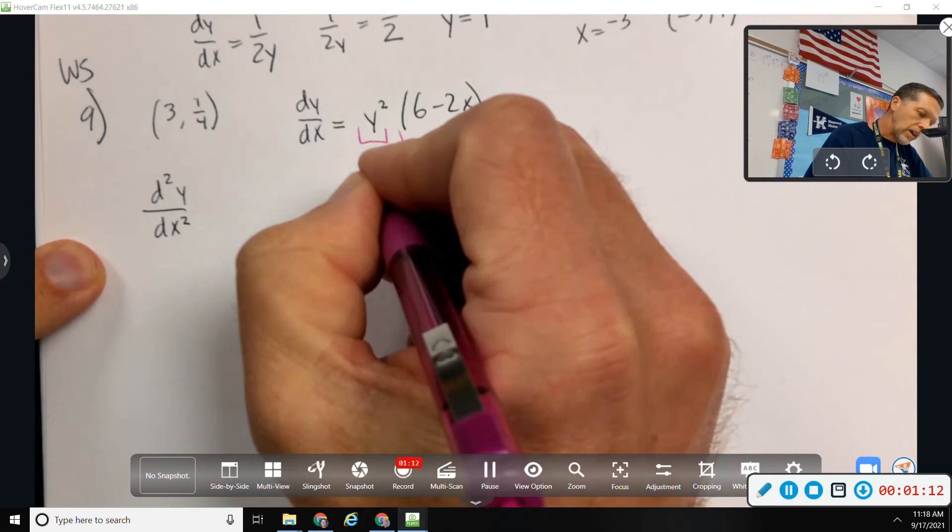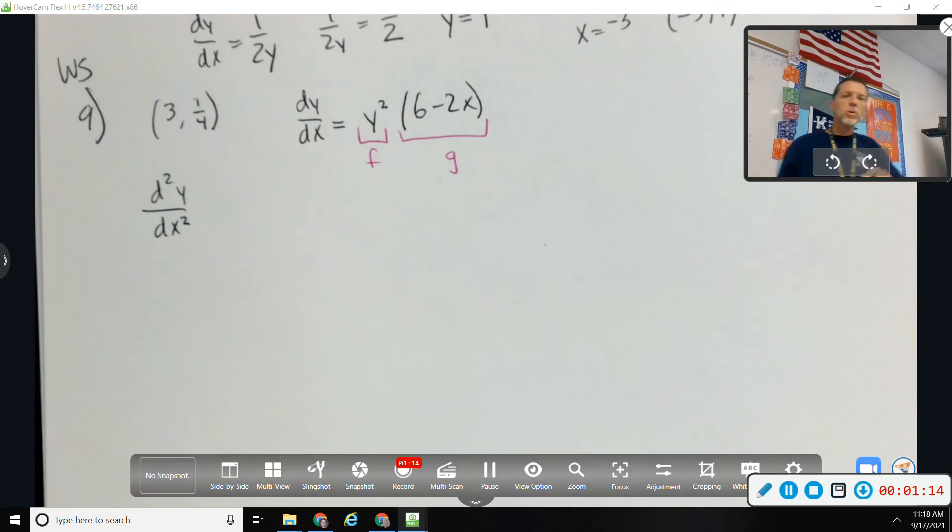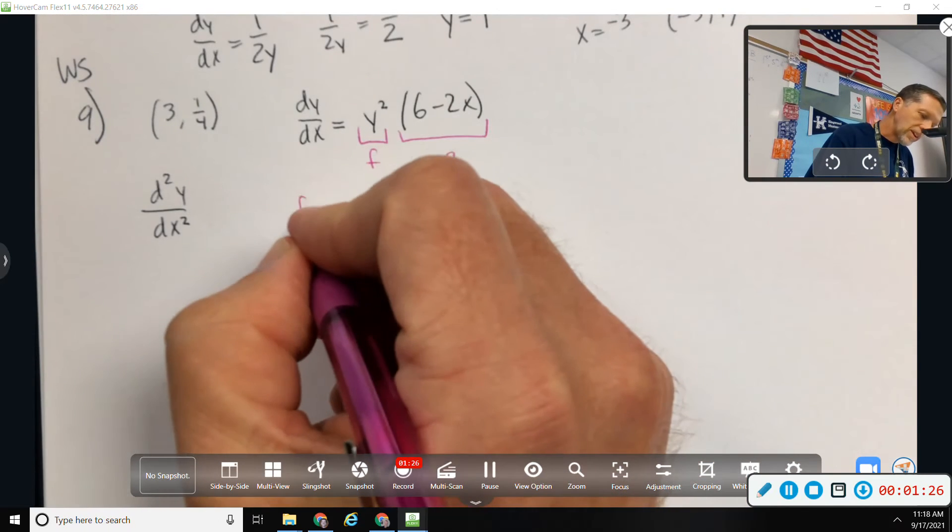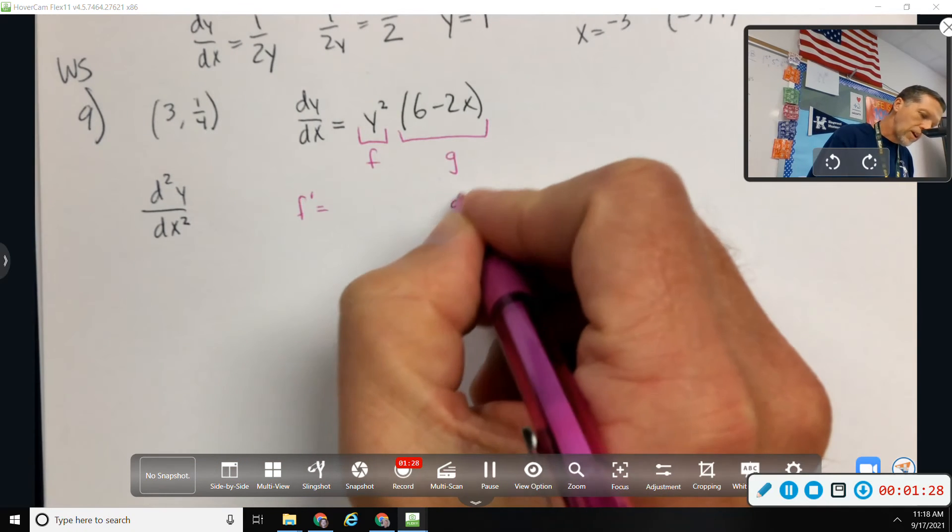This is going to have to be a product rule. And it looks more complicated than I want to just do like a product rule in place. So I'm going to split it up, show the work, piece it back together. So f prime, g prime.